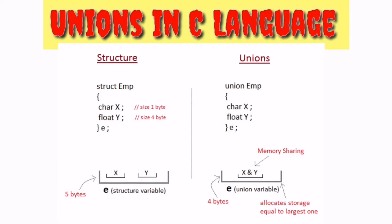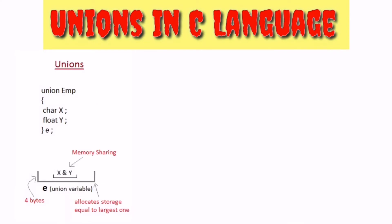The main difference between structure and union is memory sharing. The syntax is the same, but in a union, memory is shared. Storage is allocated equal to the largest member. In a union you can define many members, but only one member contains a value at any given time.